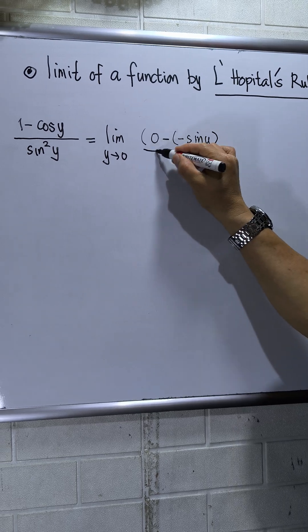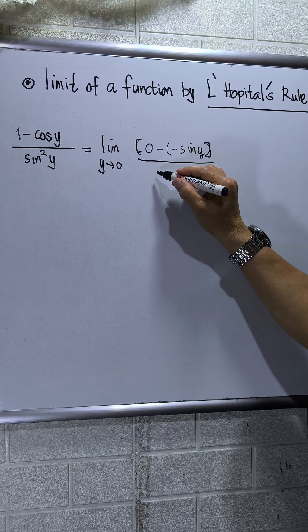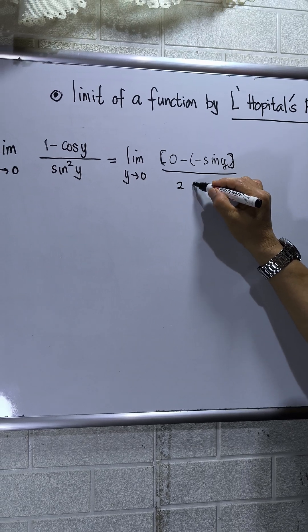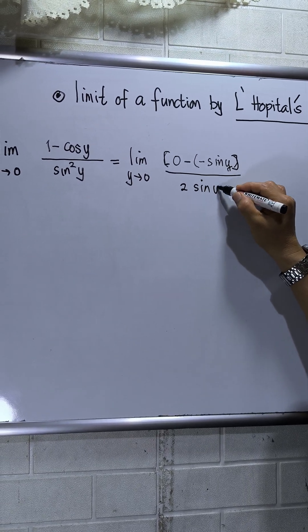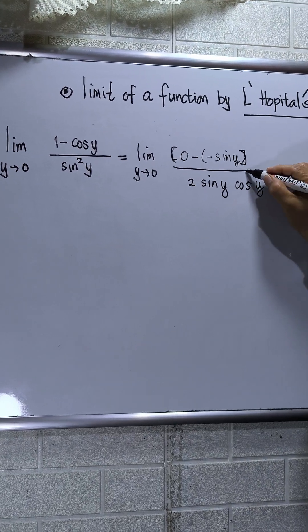Then this will be over—this will be brackets—then the derivative, that will be 2 sin y, then derivative of sine, that will be cos y.